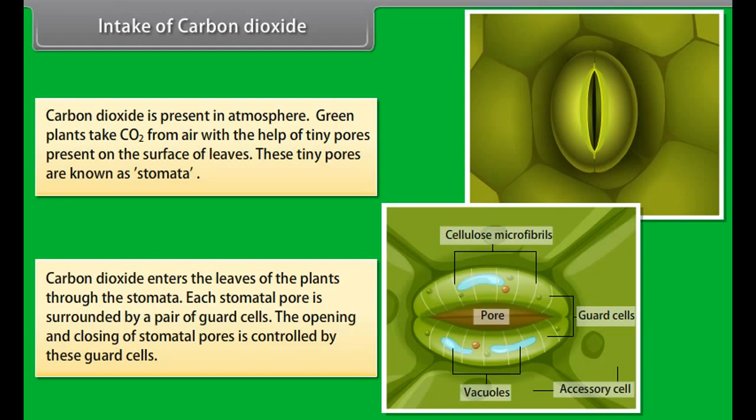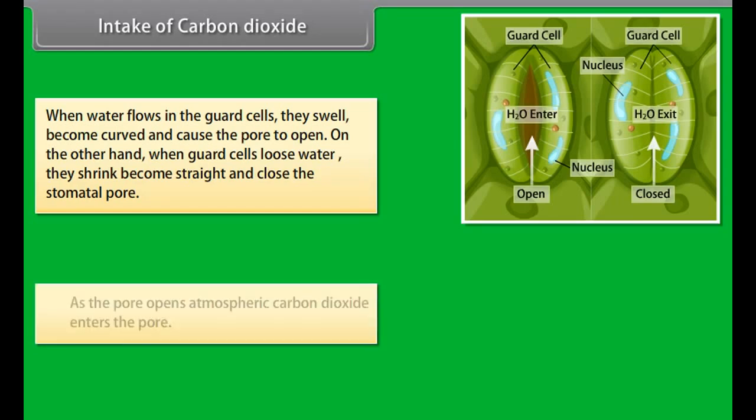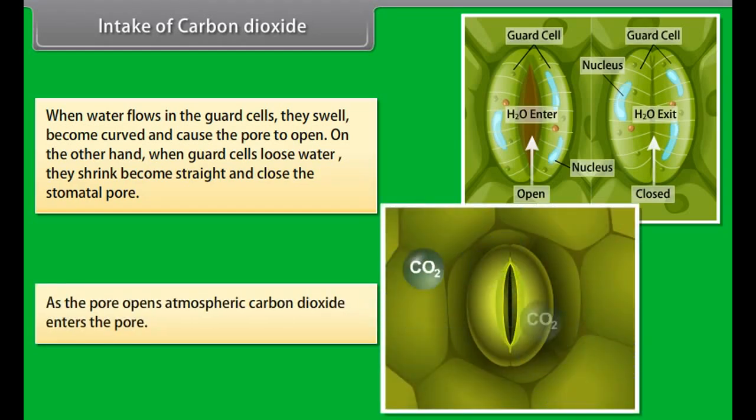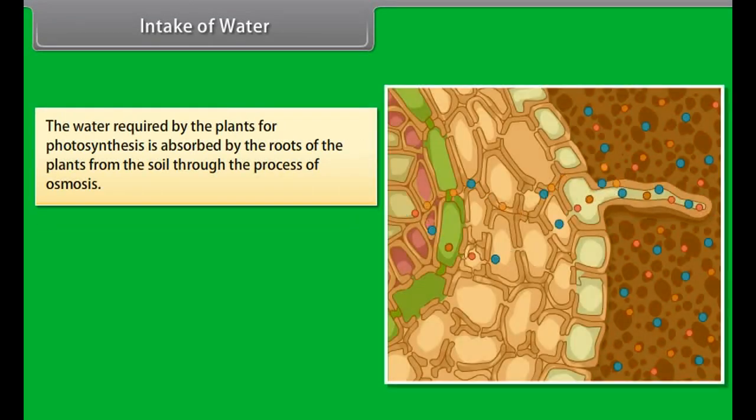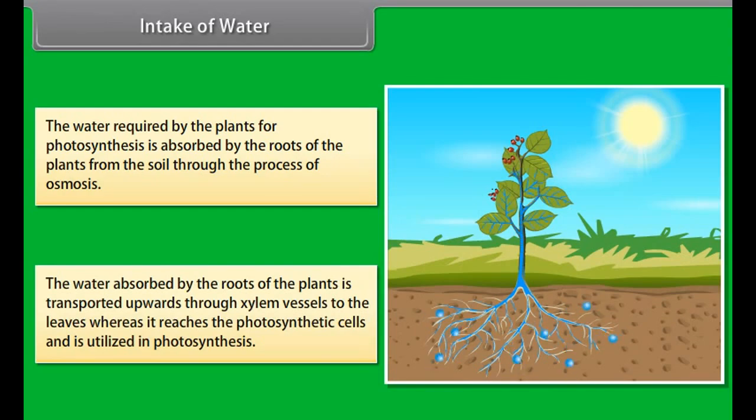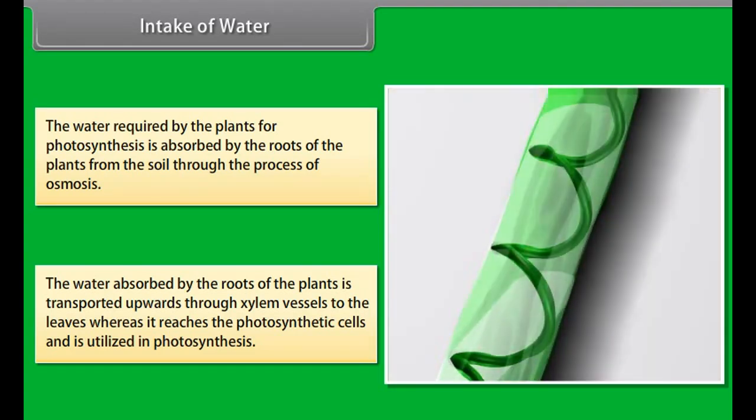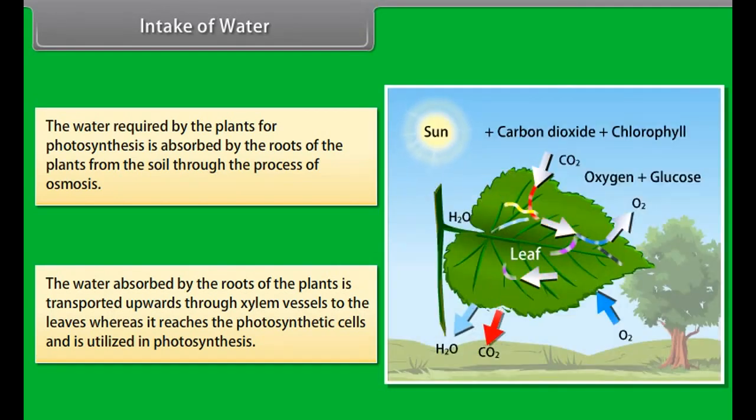Intake of carbon dioxide. Carbon dioxide is present in the atmosphere. Green plants take CO2 from air with the help of tiny pores present on the surface of leaves. These tiny pores are known as stomata. Carbon dioxide enters the leaves of the plants through stomata. Each stomatal pore is surrounded by a pair of guard cells. The opening and closing of stomatal pores is controlled by these guard cells. When water flows in the guard cells, they swell, become curved, and cause the pore to open. On the other hand, when guard cells lose water, they shrink, become straight, and close the stomatal pore. As the pore opens, atmospheric carbon dioxide enters the pore.